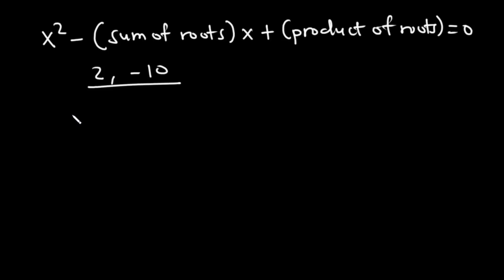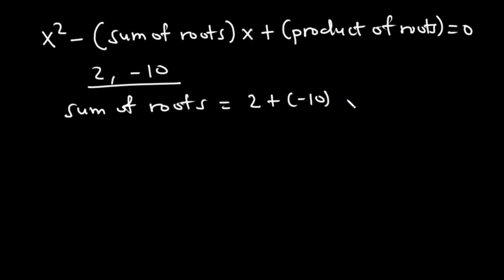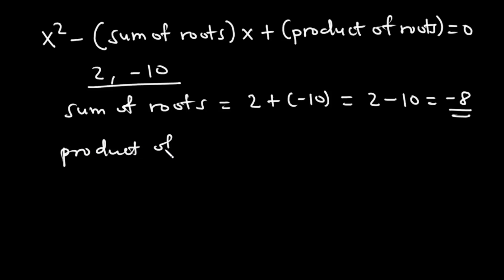Now let's find the sum of roots. The sum of roots is equal to 2 plus negative 10, which is 2 minus 10, equal to negative 8. The product of roots is equal to 2 times negative 10, which is equal to negative 20.